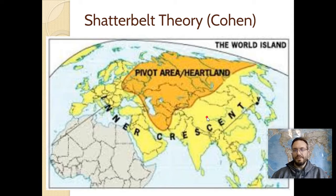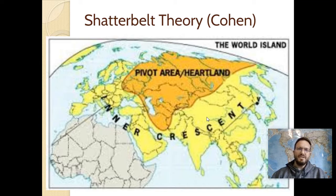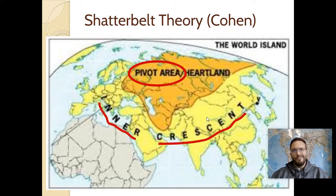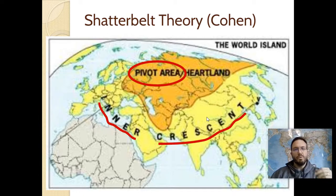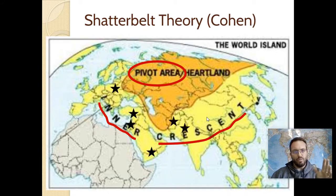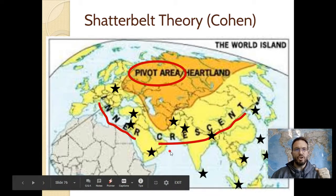The last theory is shatterbelt theory, by Saul Cohen, who builds on the ideas of heartland and rimland. Cohen changes the wording slightly — he calls the heartland the 'pivot area' and the rimland the 'inner crescent.' What he adds is the concept of shatter belts: a series of shatter belts throughout the inner crescent, marked by stars on the map, each considered an area of geopolitical weakness.